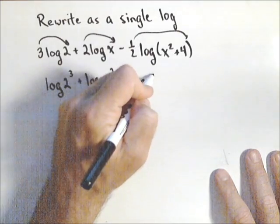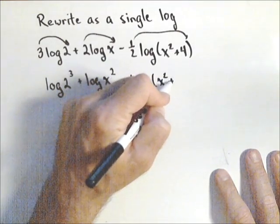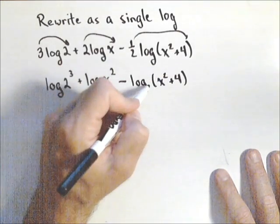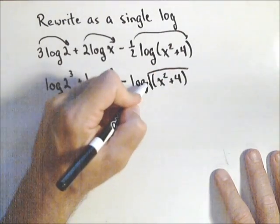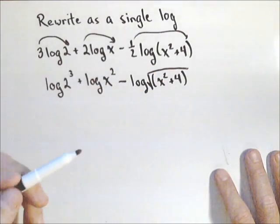You're going to get the same answer either way. So minus log, and this is going to be x squared plus four to the one half or square rooted, because a one half power is the same thing as a square root.